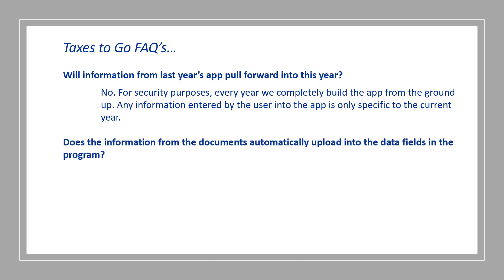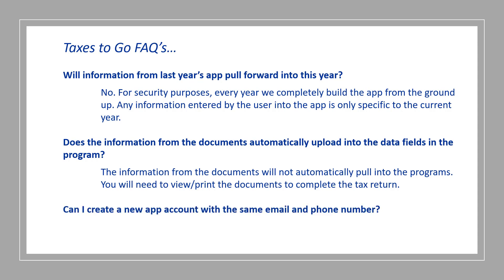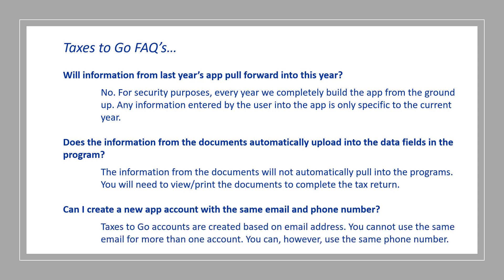Does the information from the documents automatically upload into the data fields in the program? The information from the documents will not automatically pull into the programs. You'll need to view or print the documents to complete the tax return. Can I create a new app account with the same email and phone number? Taxes to Go accounts are created based on email address. You cannot use the same email for more than one account. You can, however, use the same phone number.